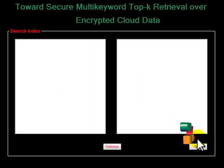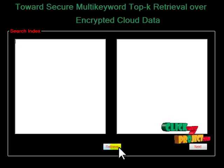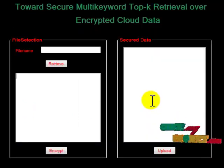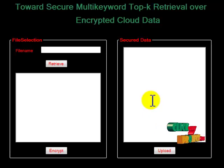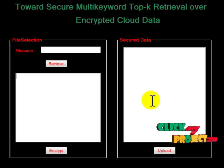The data owner encrypts the search index using the user key, so we can see the search index in encrypted format. Then, in the data file encryption step, each data file is encrypted separately before being placed on the cloud server. The files are encrypted using the encryption keys already provided to the user.